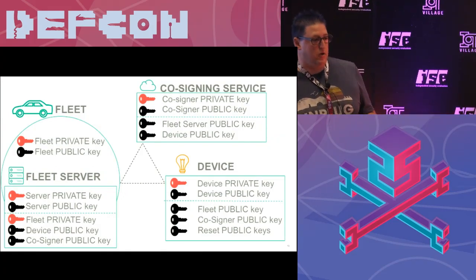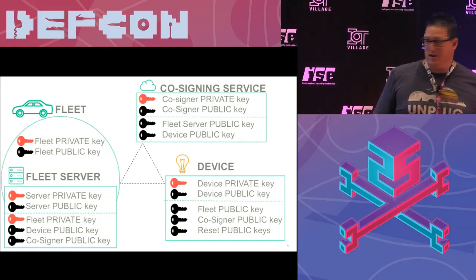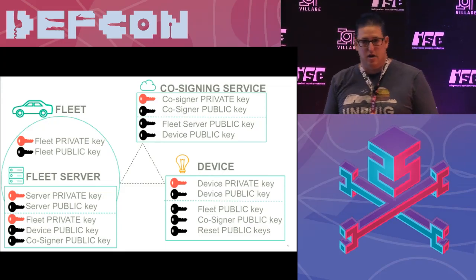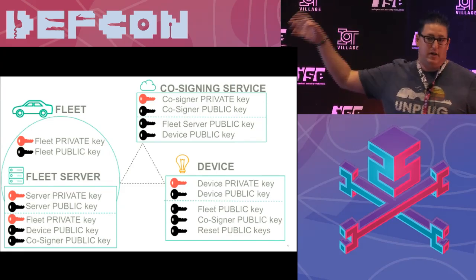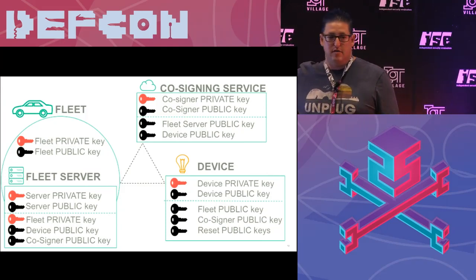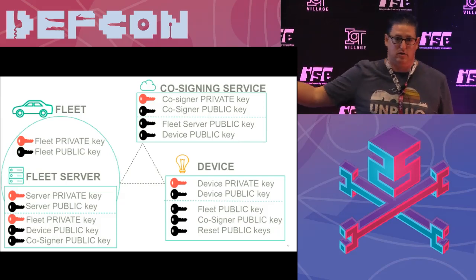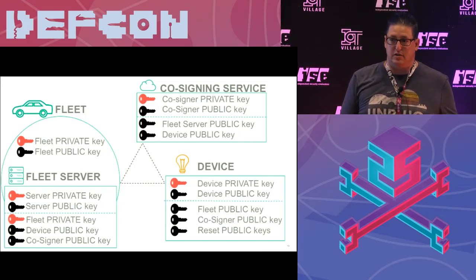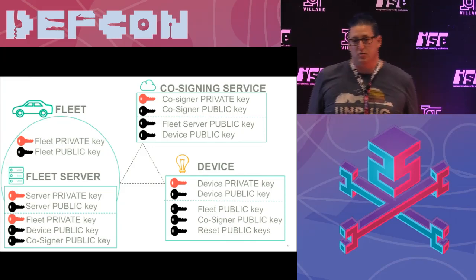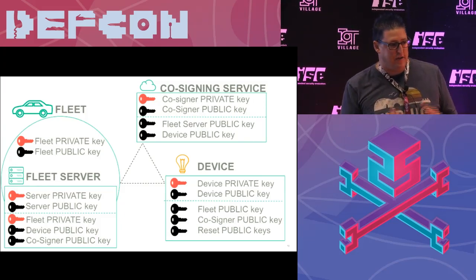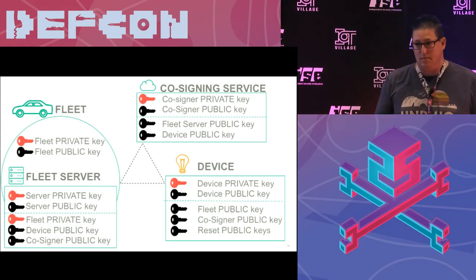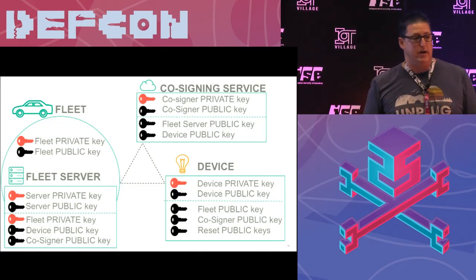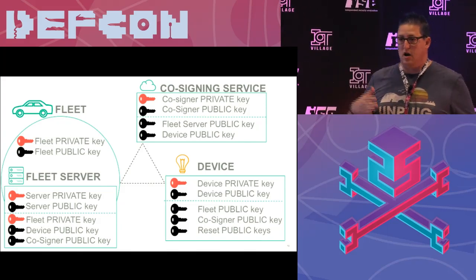There are a lot of keys here. Every single device has its own identity — that could be a secure element, TPM, or TEE — and that identity is used to communicate with servers. The device also has the public key for two things: the fleet and the co-signing service. It doesn't need to know a server because all it needs to know is those two public keys, and that allows it to know that it's authorized to speak to that server. We also create reset keys for recovering when everything is compromised. For every fleet, we create a new private-public key pair so that if one fleet is compromised, other fleets are not.